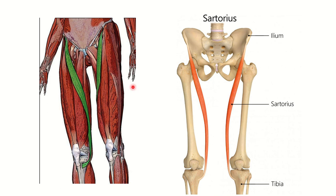In the first picture, we can see the sartorius muscle alongside other muscles, arising from the anterior superior iliac spine, traveling downwards, and ending at the tibia. It is a muscle of the anterior compartment. Other muscles of the anterior compartment include the rectus femoris and the vastus group — vastus medialis, lateralis, and intermedius. The sartorius causes flexion of the hip joint and also flexion of the knee joint.